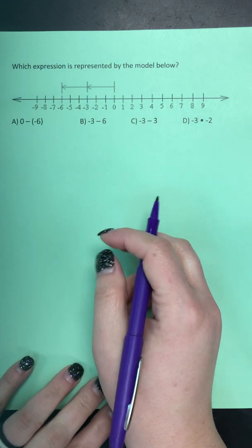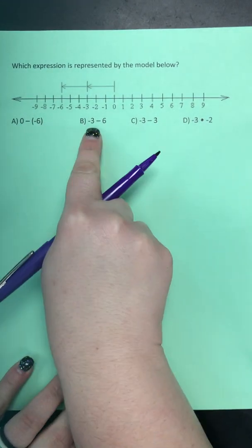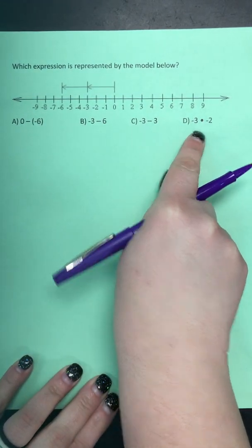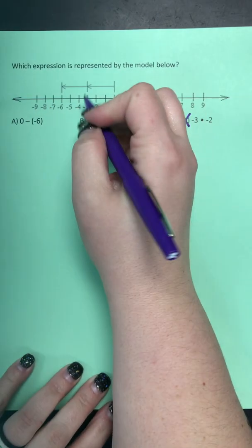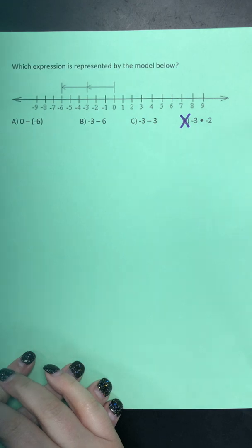And so I know I'm going to be adding or subtracting. So this is subtracting, subtracting, subtracting. This is multiplication, so the answer cannot be D because we're not doing those hops.